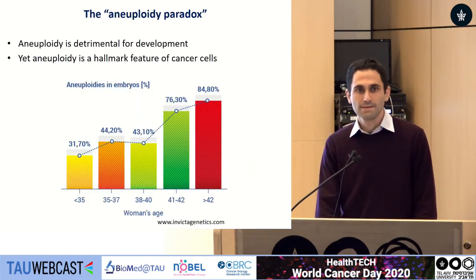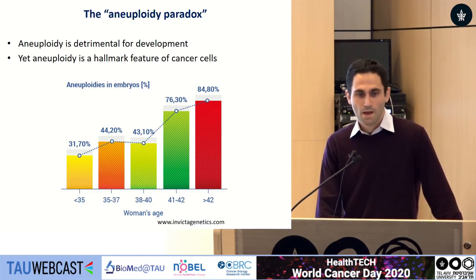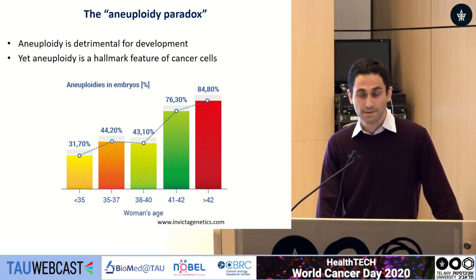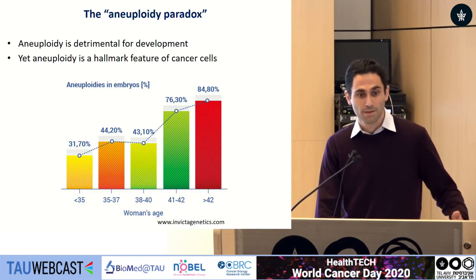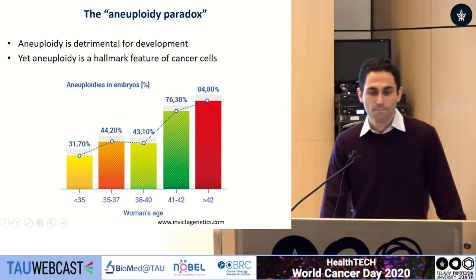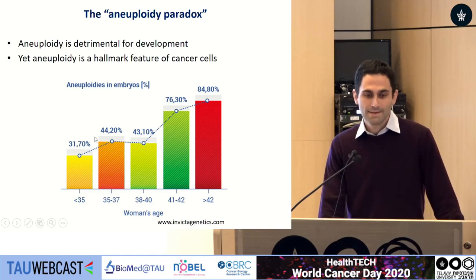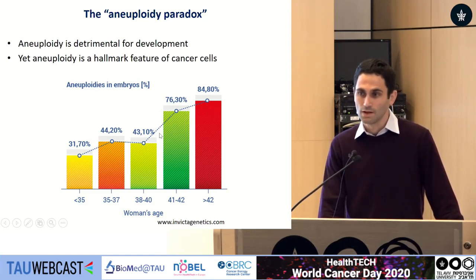This is really a fascinating paradox in biology in general, not just in cancer. Because in development, which is another process that involves a lot of cell proliferation, aneuploidy is detrimental — it perturbs proliferation, it is not compatible with survival, and indeed in human pregnancy, aneuploidy is the major cause of miscarriage.